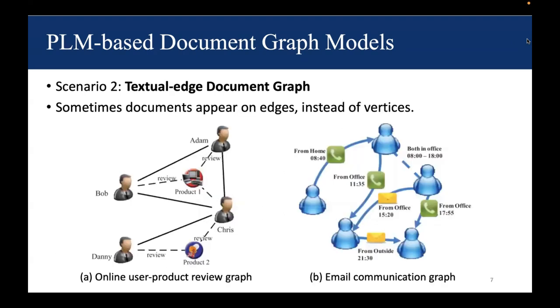The second scenario is textual edge document graph, where documents sometimes appear on edges instead of vertices. The left figure is online user product review graph. If a user buys a product, there is a link between them, and the corresponding textual review appears on the edge.